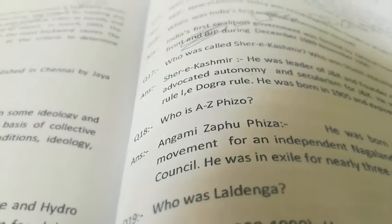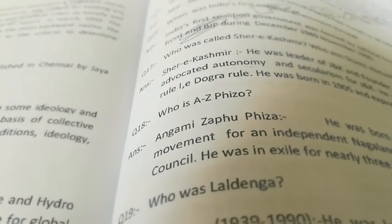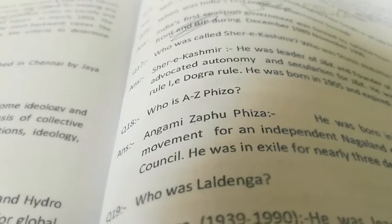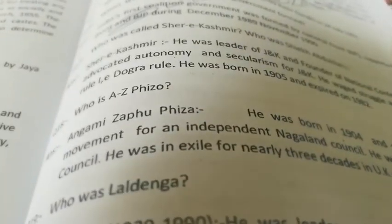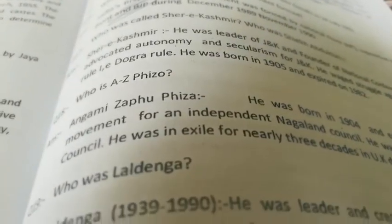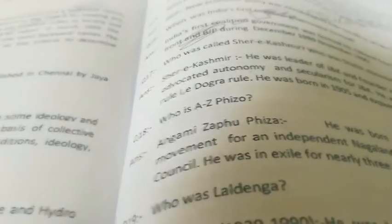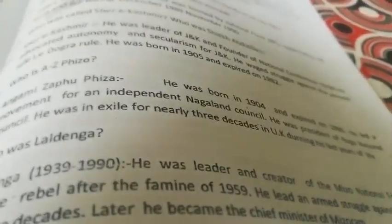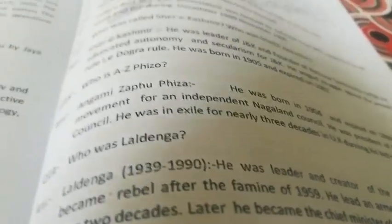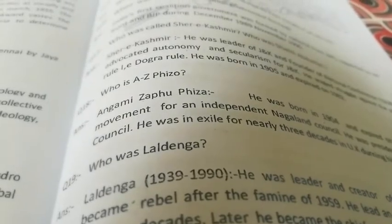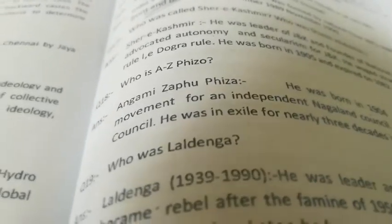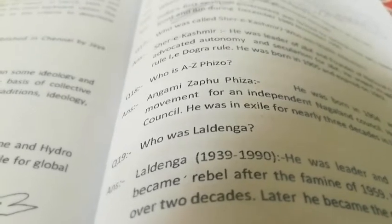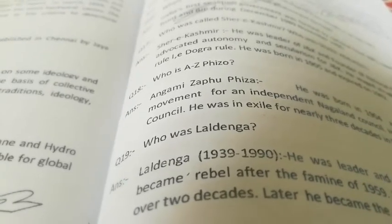Sheikh Mohammed Abdullah was a famous leader of Jammu and Kashmir and founder of the National Conference in 1938. He advocated autonomy and secularism for J&K. He waged a struggle against the Dogra rule. He was born in 1905 and expired in 1982. Who is Angmi Zipu Fiza?